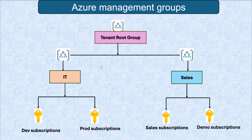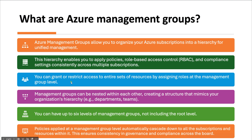You can grant or restrict access to an entire set of resources by assigning roles at the management group level — knowing that IT Department users have certain access and Sales Department users have other access. Management groups can also be nested within each other, creating a structure that mirrors your organization's hierarchy, like departments and teams. For example, within the IT Department you could have Dev, QA, and DevOps teams, each with their own subscription managed at the group level.